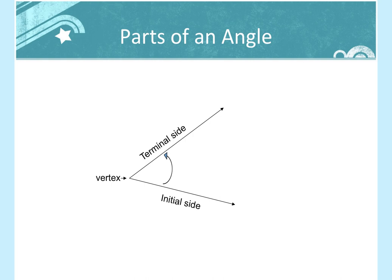We start with the parts of the angle — just some vocabulary. On the bottom is the initial side of the angle, or where it starts, and then the terminal side is where it ends. The direction will either be determined by an arrow, because it could go clockwise or counterclockwise, or by a positive or negative angle. The vertex, like every vertex, is where those two sides meet.